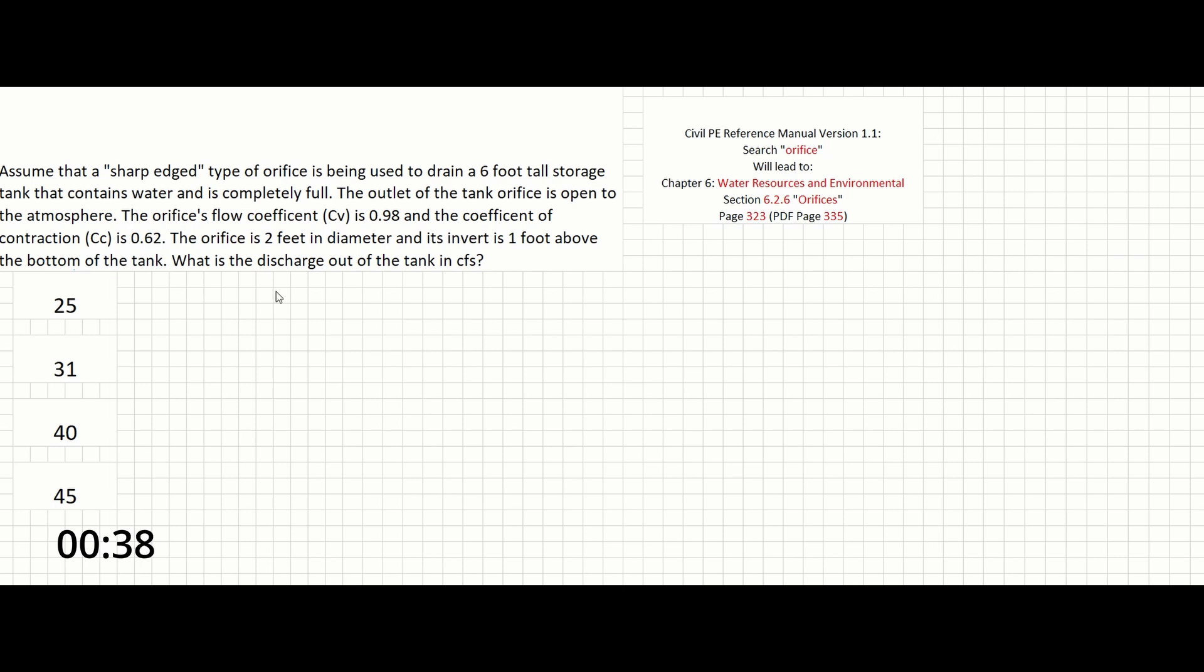So this is another problem that we'll solve for flow rate using the equation that includes the discharge coefficient of an orifice. We can see that we are given the flow coefficient CV and the coefficient of contraction CC. But really, we need CD. However, we can find that easily either calculating it from CC times CV or pulling CD directly from the reference manual.